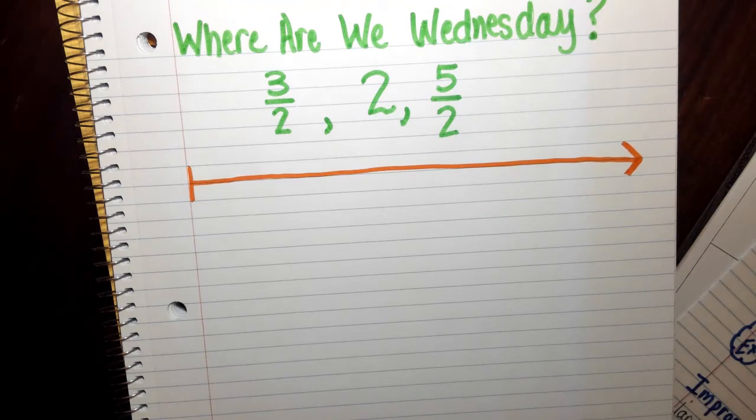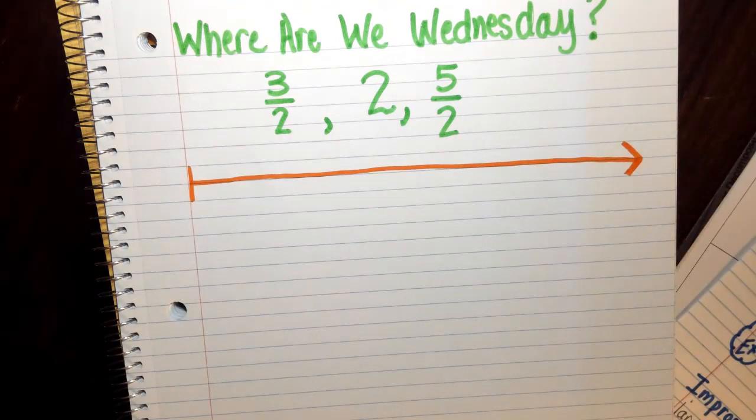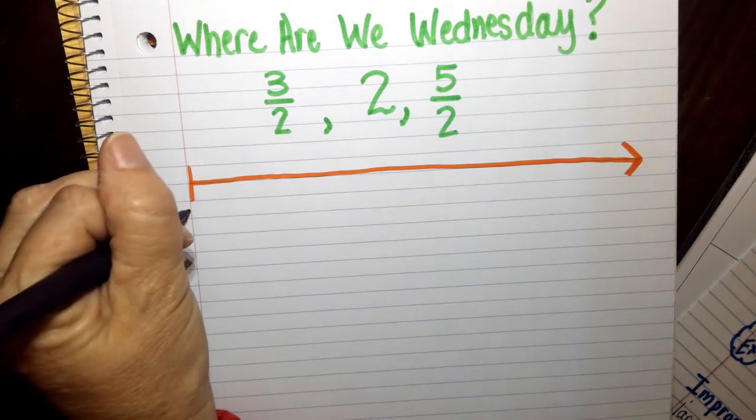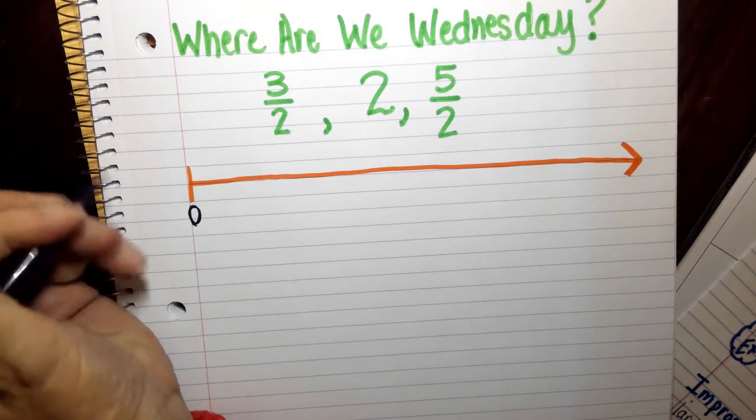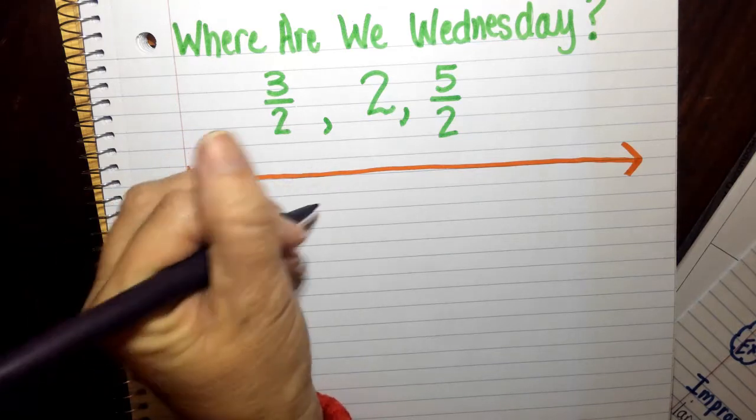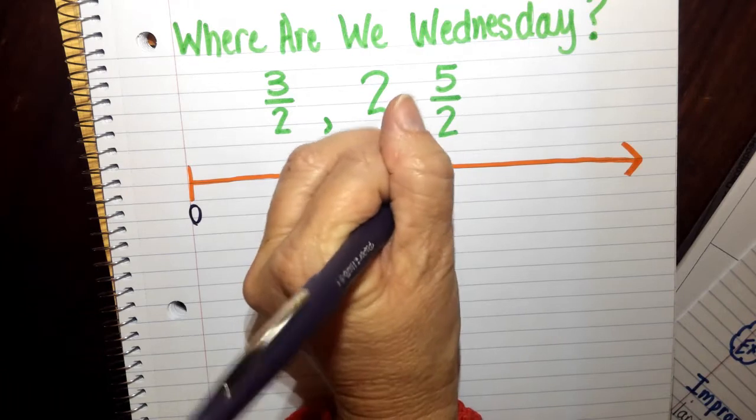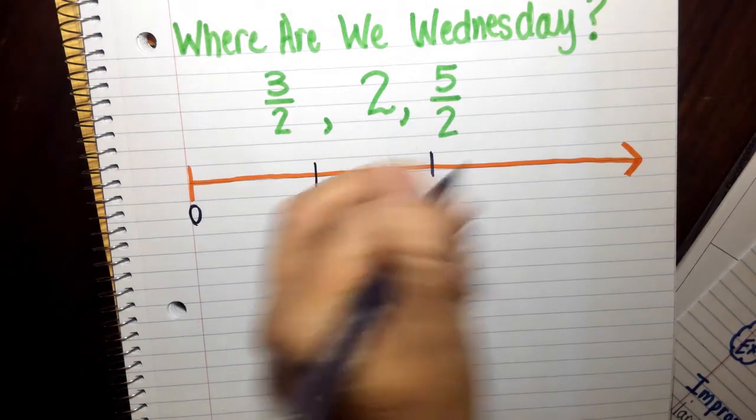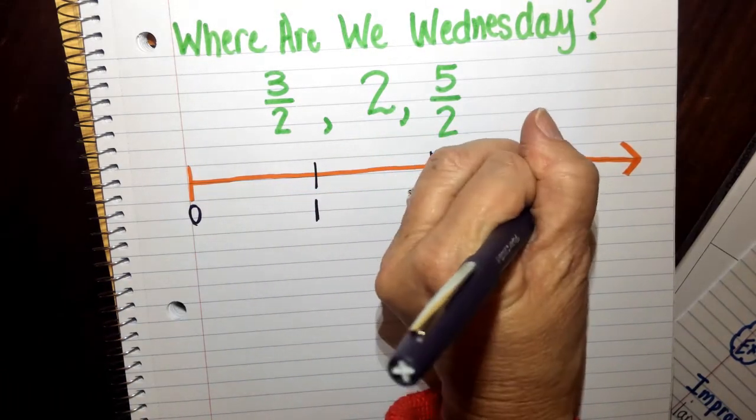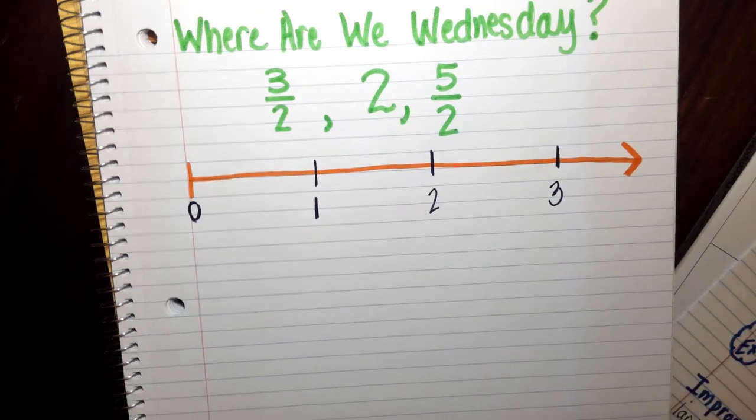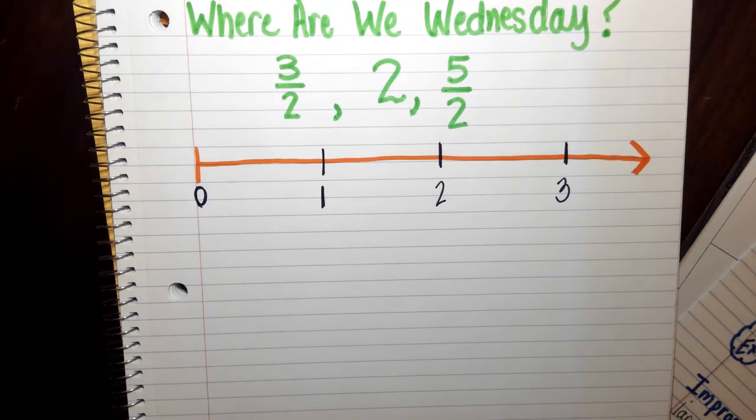So your number line should kind of look like my number line. We're going to call this zero for now, and we're going to partition this off into some equal pieces. So I'm going to call this number one, this number two, and this number three. So there are my three whole numbers.